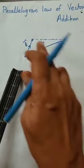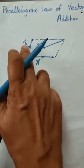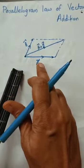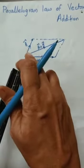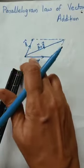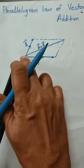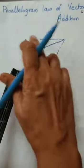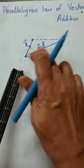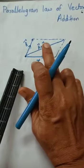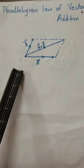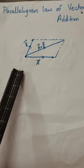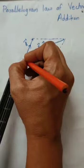Now we have a parallelogram here with two adjacent sides representing two vectors A and B. These adjacent sides are intersecting, meeting at a common point. We have the diagonal of the parallelogram, and this diagonal is vector A plus vector B — the vector sum, or the resultant. This diagonal represents the magnitude of the vector sum or magnitude of the resultant.